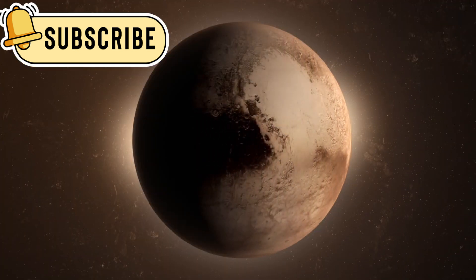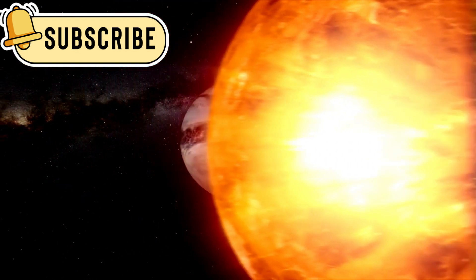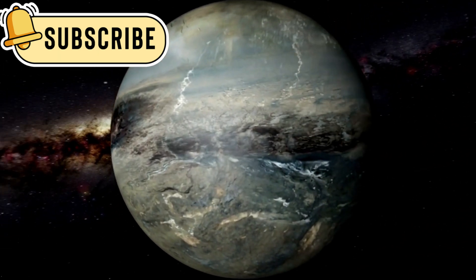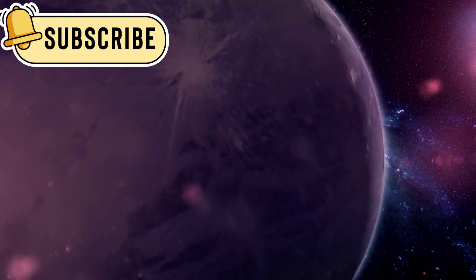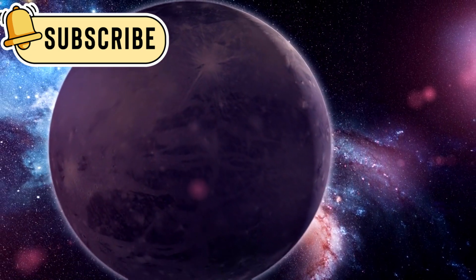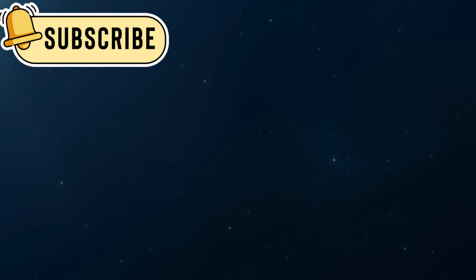Pluto's orbit is unique. Unlike any other planet in our solar system, it takes 248 years to complete just one orbit around the Sun. Since its discovery in 1930, Pluto hasn't even finished a single full orbit. This slow movement adds to the mystery of this distant object.